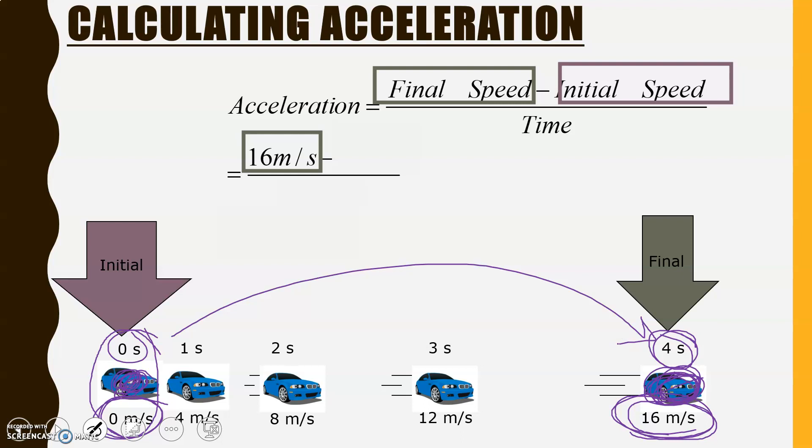Alright, so we're going to plug in our final speed. So, our final speed, again, was 16 meters per second. Our initial speed was zero. And the time that it took was four seconds. So, 16 minus zero is just 16. 16 divided by four is four. And remember, it is meters per second squared.